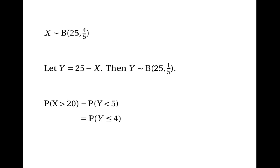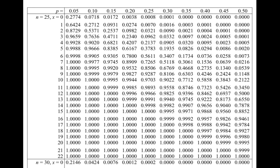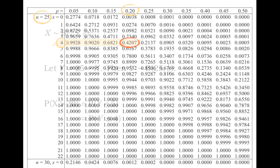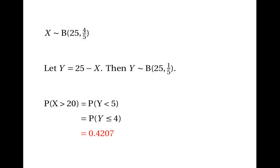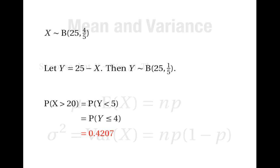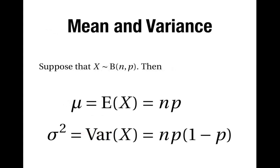And this is something that we can look up in the tables. We find the table where n is 25, we look for the column headed by 0.2, because 0.2 is a fifth, and we follow along the line from 4 to get 0.4207. And that's the answer to our question — the probability of getting more than 20 successes is 0.4207.